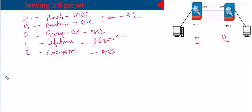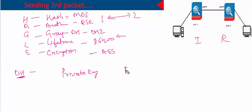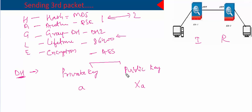Before sending the third and fourth messages, both initiator and responder calculate something called Diffie-Hellman keys. Diffie-Hellman is an asymmetric algorithm — what I mean by asymmetric is that it creates a key pair. One of those keys is known as the private key and the other one is the public key. Let's name the private key of the initiator as 'a' and the public key as 'Xa'.